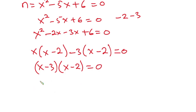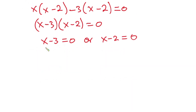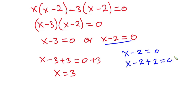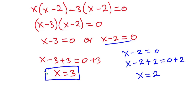From the factored form, x minus 3 equals 0 or x minus 2 equals 0. Solving the first equation: x equals 3. Solving the second: x equals 2. So these two values are valid solutions to this problem.